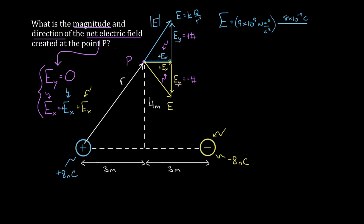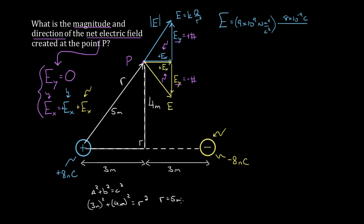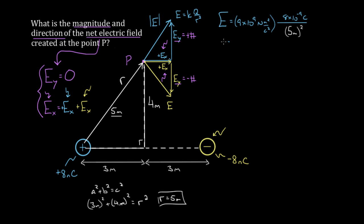We're kind of in luck — if you know about 3-4-5 triangles, this forms one: one side is three meters, the other is four meters, so this side is automatically five meters. If you're not comfortable with that, the Pythagorean theorem says a squared plus b squared equals c squared for a right triangle. A is three, B is four, so three squared plus four squared equals r squared — nine plus sixteen equals twenty-five, and the square root gives r equals five meters. That's the r we use, so we divide by five squared, and if you calculate that, the electric field is 2.88 newtons per coulomb — the magnitude of the field created at point P by the positive charge.